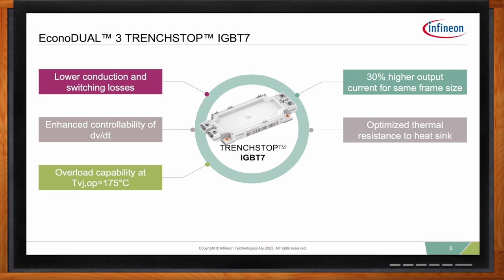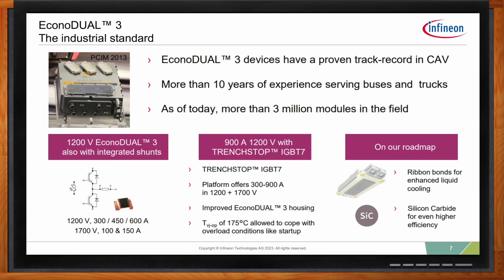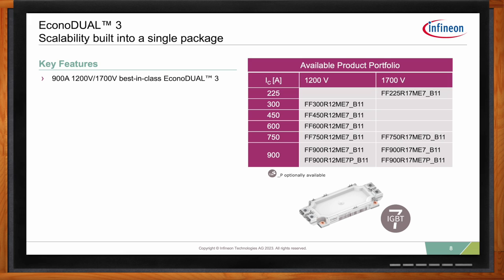Overload capability in the EconoDual 3 has been increased to 175 degrees Celsius. Besides e-bus, the EconoDual 3 package is used extensively in wind, solar, industrial drives, UPS, railway traction, and construction equipment. This is one of the most commonly used packages for drives and electric buses and trucks, with more than 10 years on the market and over three million devices running in the field. Regarding scalability, in the same EconoDual 3 package we offer both 1200-volt and 1700-volt versions, scalable from 225 amps all the way up to 900 amps, allowing customers to keep a common design and adjust to their power needs with minimal adjustment.